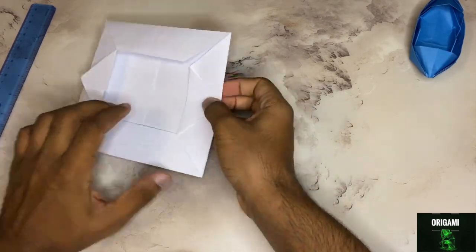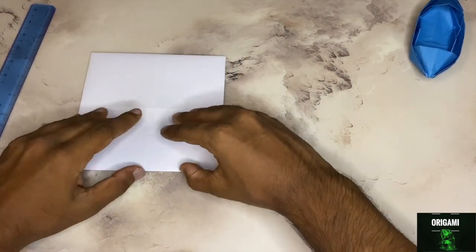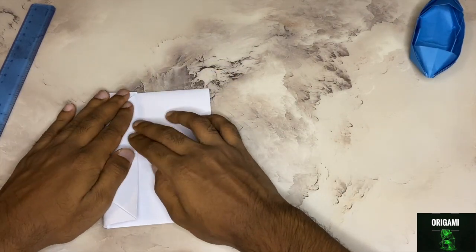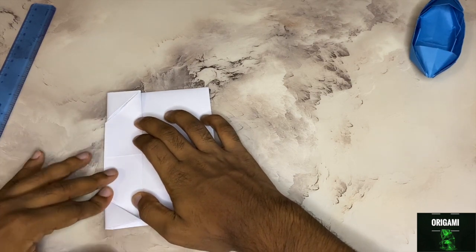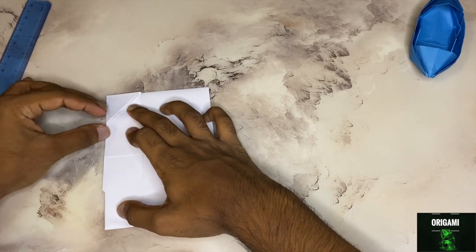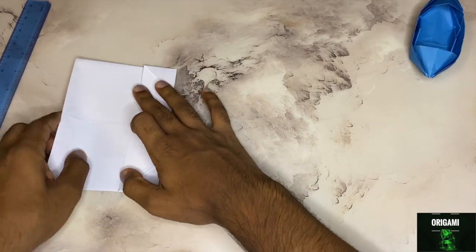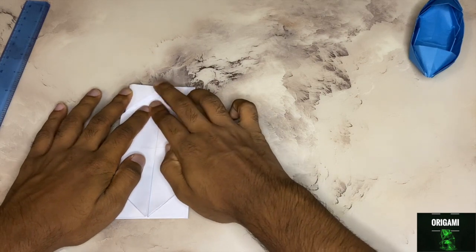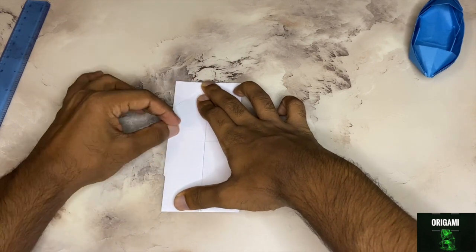Now turn over this model and bring this edge to the center. Make sure the creases are aligned. Crease well. And this side as well, bring it to the center. And crease.